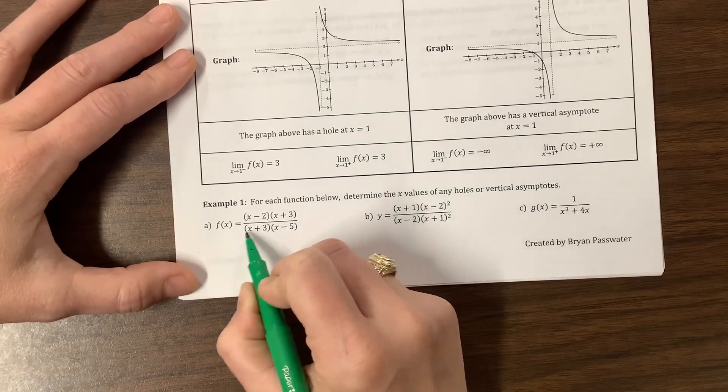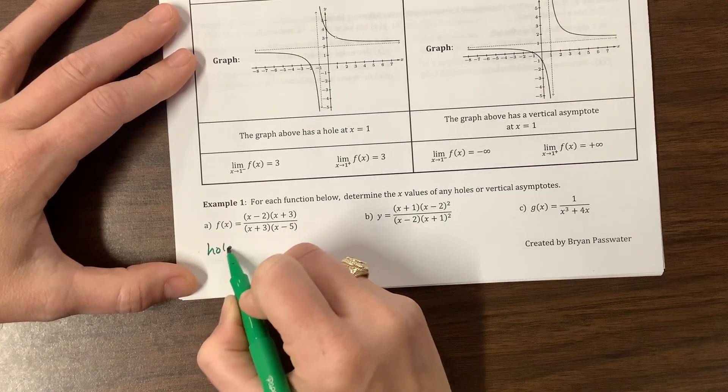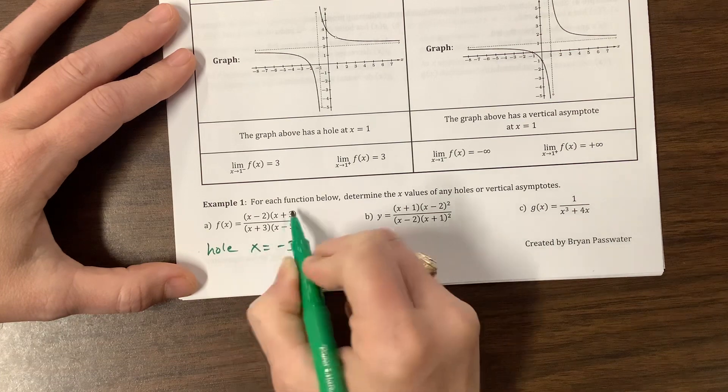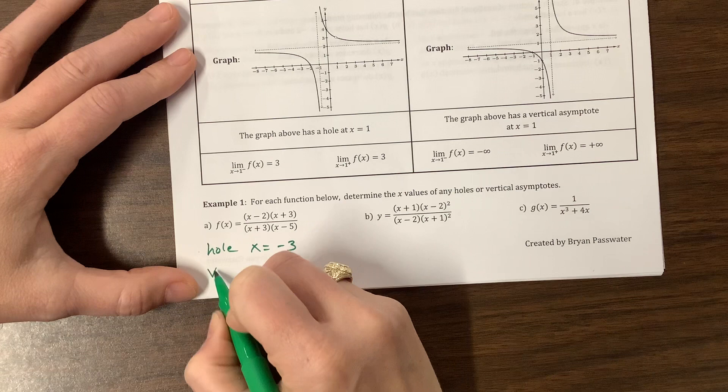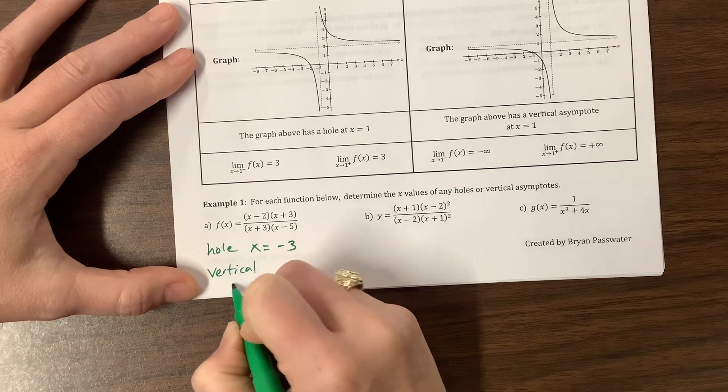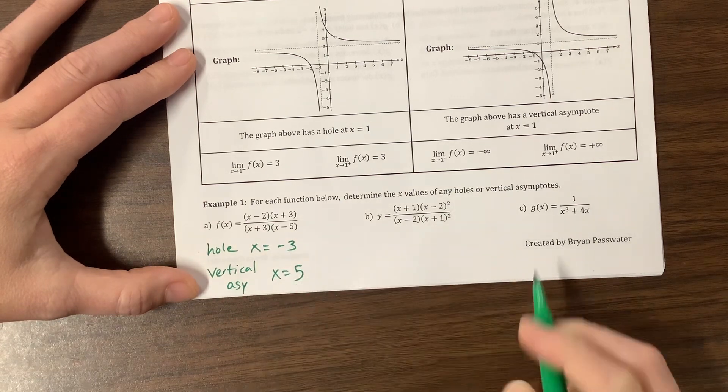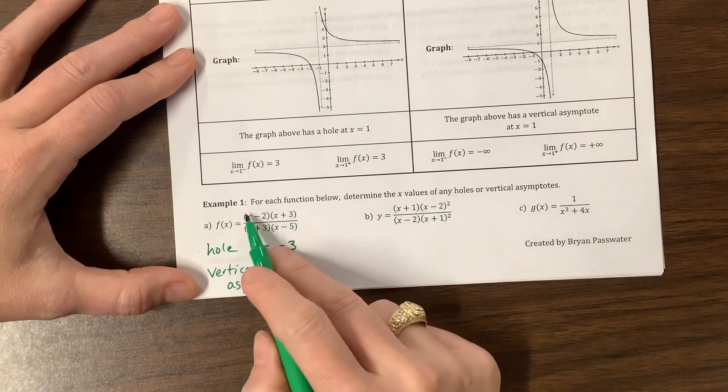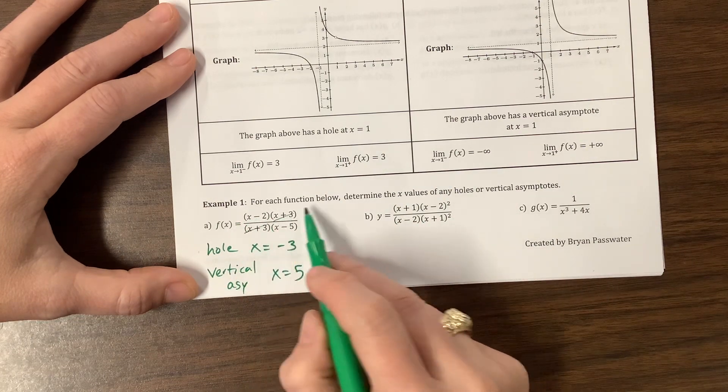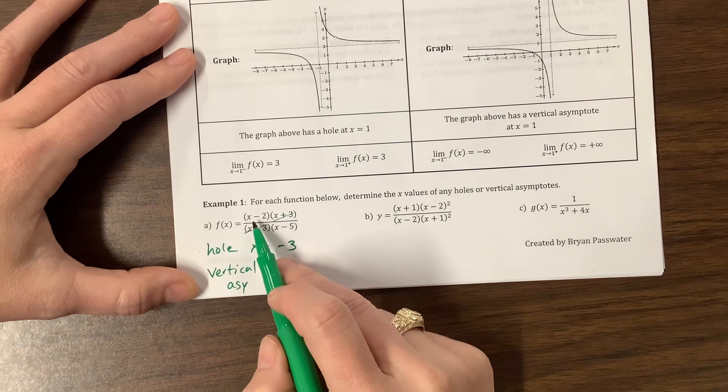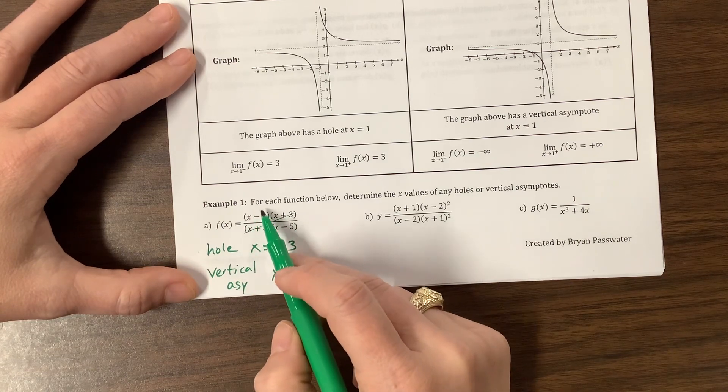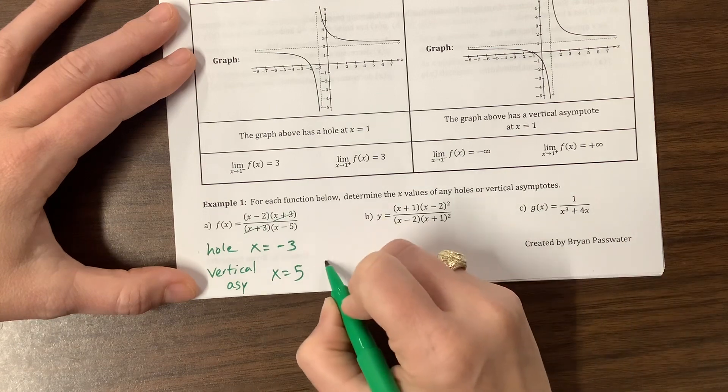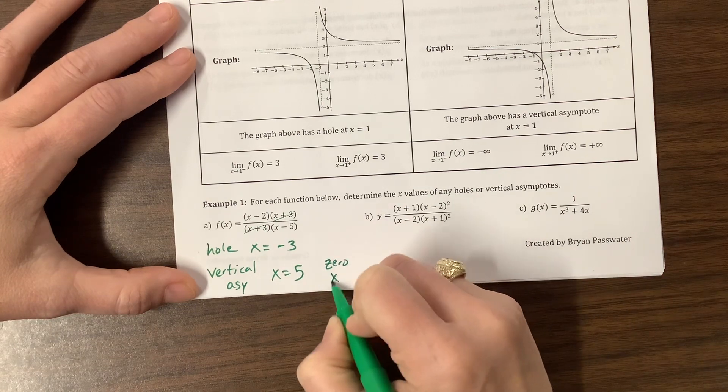Let's jump in. We'll do these examples and then I might start the next video. I see right here that we have a hole when x is equal to negative three because those would have been removed from the equation. And we have a vertical asymptote when x is equal to five. And we also have a zero when, so these things have removed themselves. This one right here would give us a zero. Anytime the numerator can be set equal to zero, that's a zero. So we have a zero when x is equal to two.